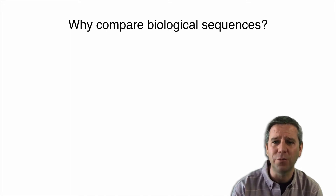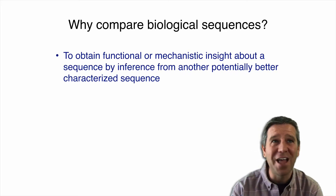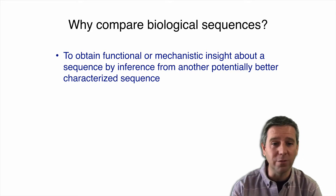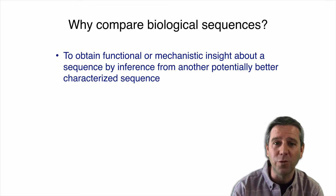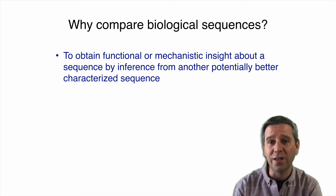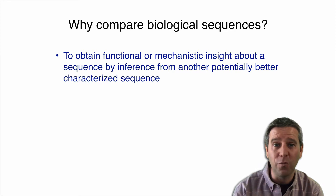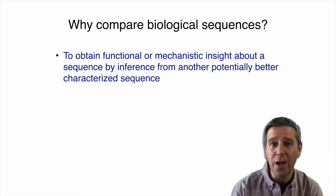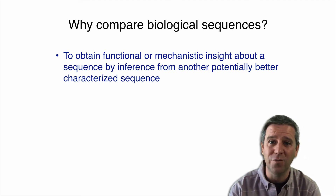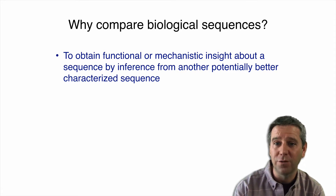So why do we want to compare sequences in this way? We want to obtain functional or mechanistic insight about a sequence by inference from another sequence that's potentially better characterized. For example, when we start with some unknown sequence from the lab or a sequencing run, we can search a database of well-annotated sequences where we know what those sequences are, find a match, and say this is similar to that sequence — potentially doing similar functions or activities. We can share that annotation across sequence space by finding relatives with these methods.